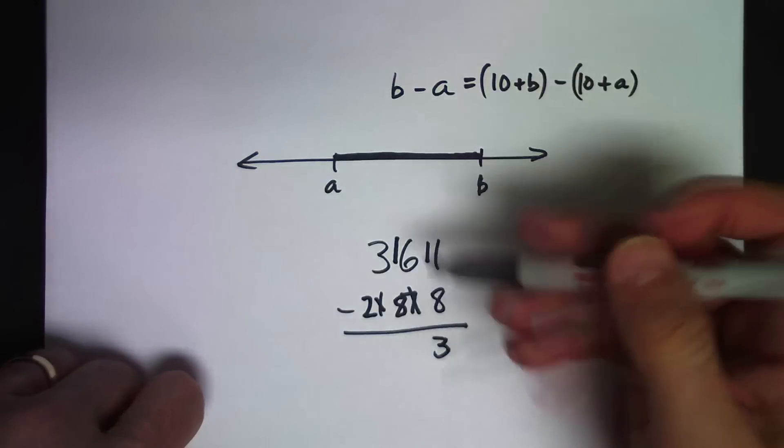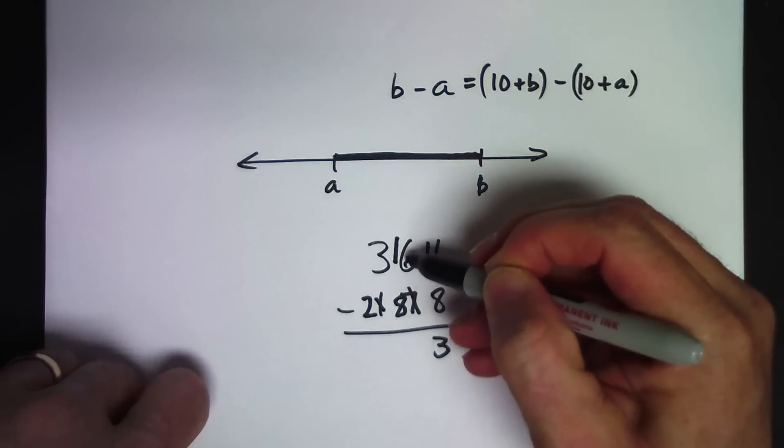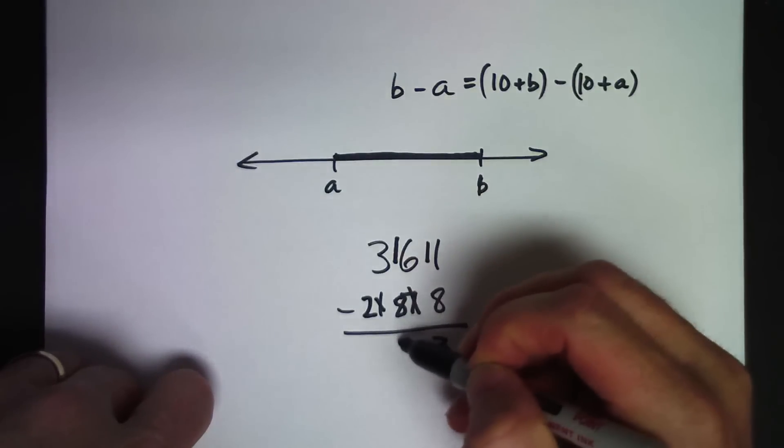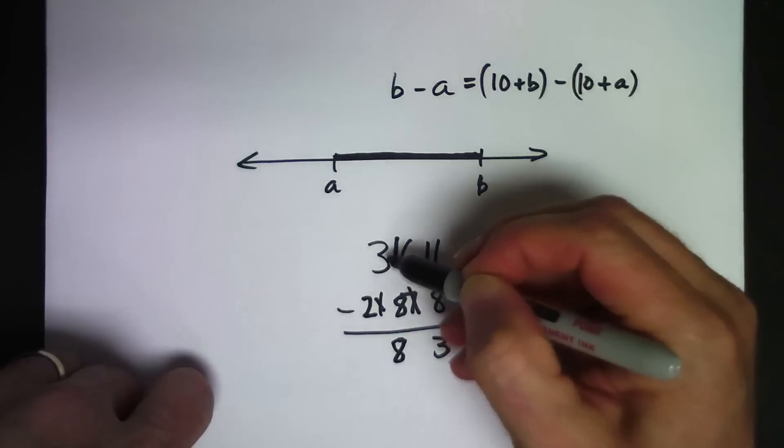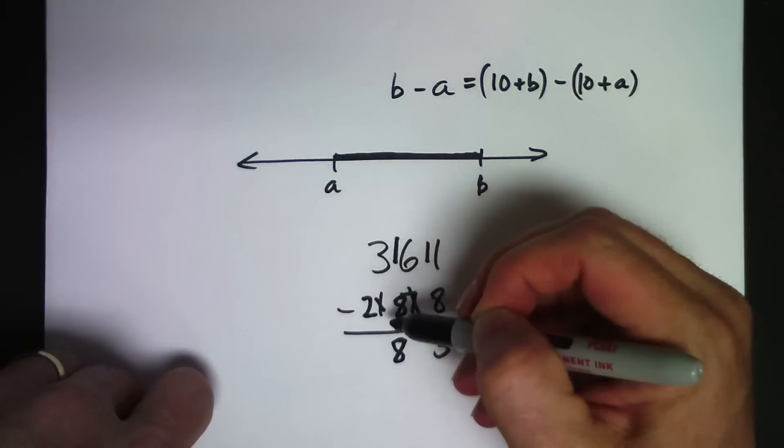Okay, so now I have 8 tens to take away from the 16. So 16 minus 8 is 8. And then the last step is just subtracting the hundreds. So 2 from 3 is 1. And that is the constant difference algorithm.